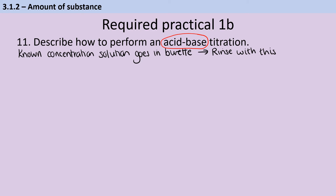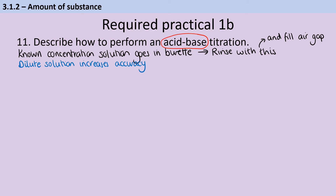It's also important to run the solution through the burette so that the air gap at the bottom gets filled. If you don't do this, your first titration reading would be artificially higher, as the first couple of centimetres cubed would just fill that air gap. Using a more dilute solution in the burette is a good way to improve accuracy, as it decreases the percentage uncertainty by making all the volumes measured higher. Also, before titrating, remove the funnel used to fill the burette, otherwise small droplets could drip in and add liquid without you realising.